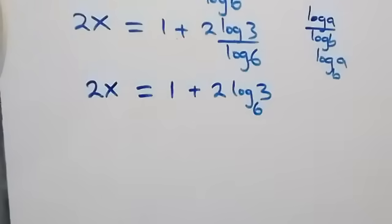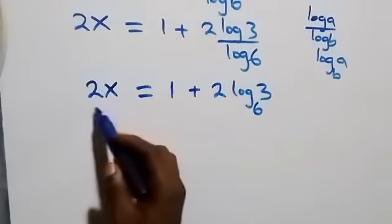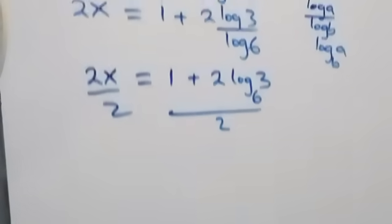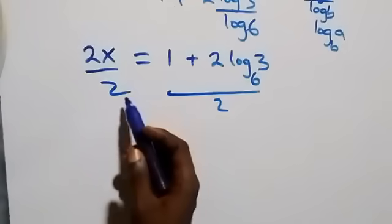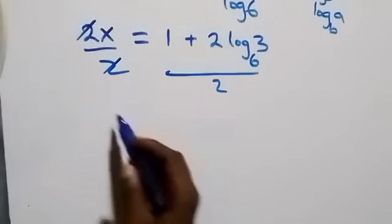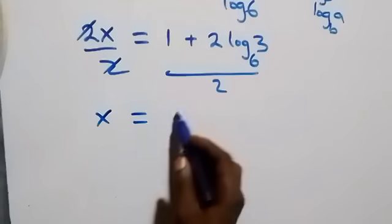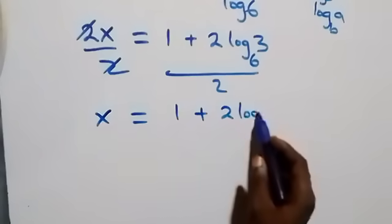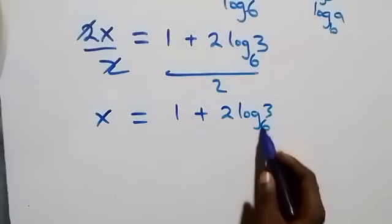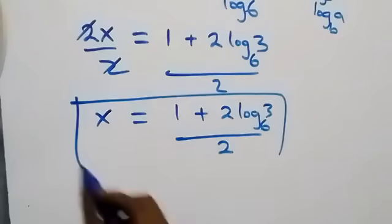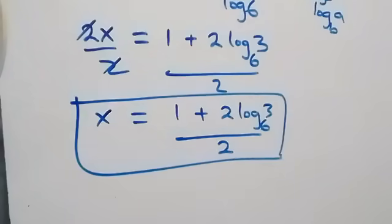From here we divide both sides by 2. The 2s cancel and we have x left, which equals 1 plus 2 log₆3, all over 2. So the value of x is (1 plus 2 log₆3) divided by 2.